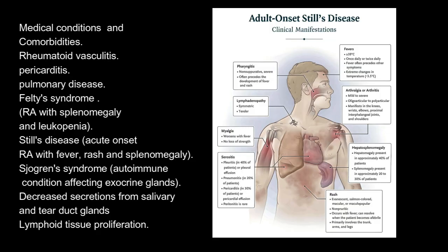Medical conditions and comorbidities include rheumatoid vasculitis, pericarditis, and pulmonary disease. Felty's syndrome is RA with splenomegaly and leukopenia. Still's disease is acute onset RA with fever, rash, and splenomegaly.